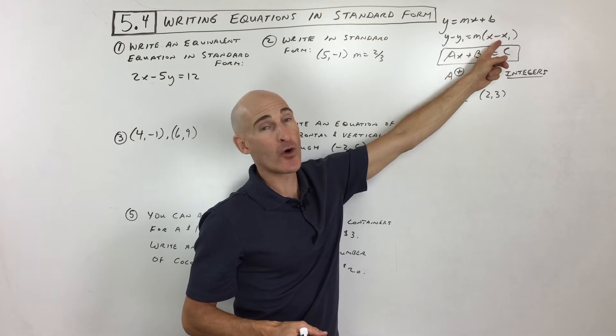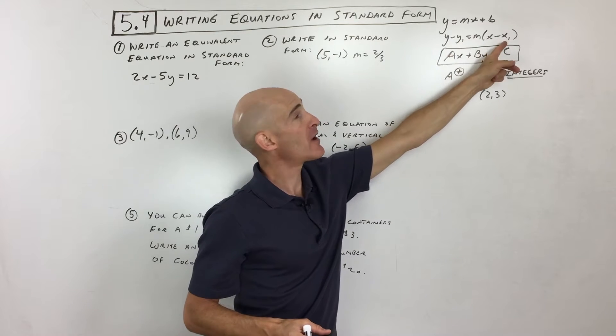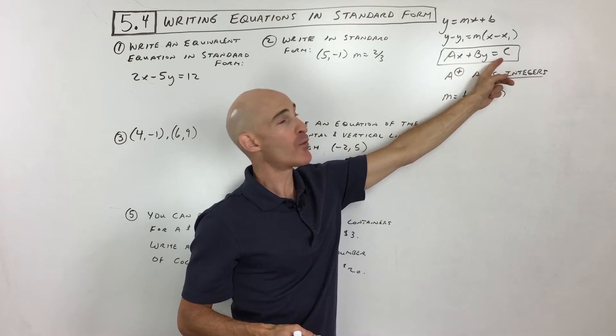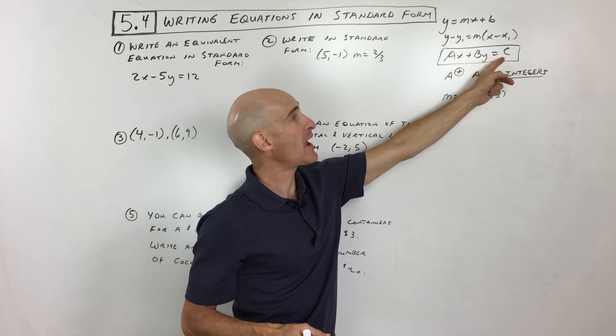We've talked about the point-slope form, when you know the slope and a point on the line that the line goes through. And now we're going to be talking about the standard form more, so that's the ax plus by equals c form.